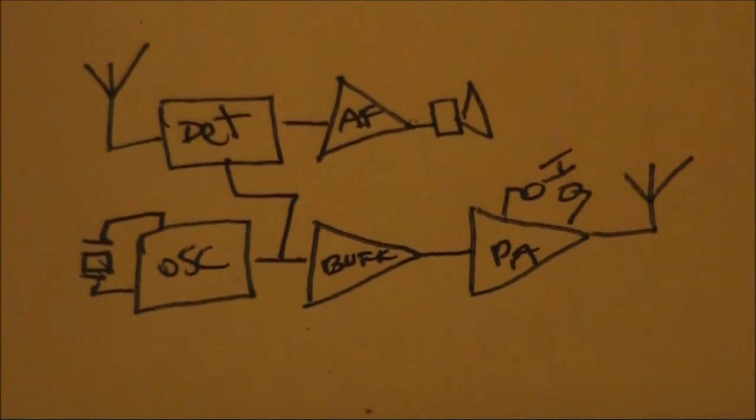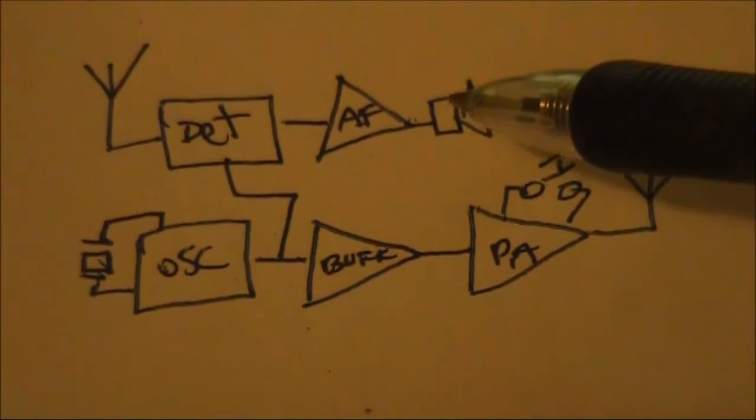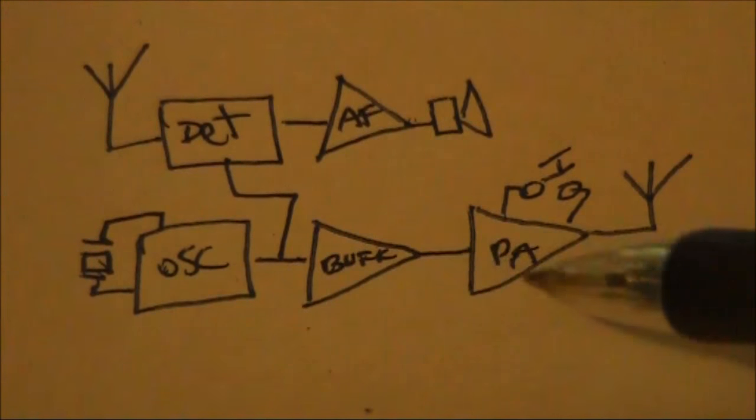A simple transceiver like this, which is a basic direct conversion CW transceiver, is also quite simple to troubleshoot. With this arrangement, you can start by troubleshooting the receiver and, if that's working, move on to the transmitter.